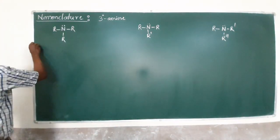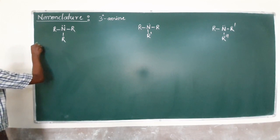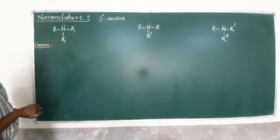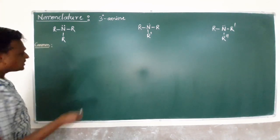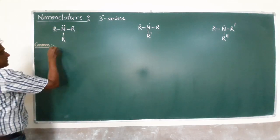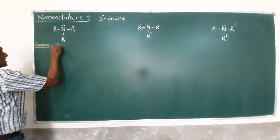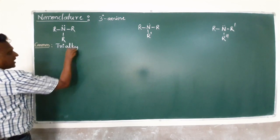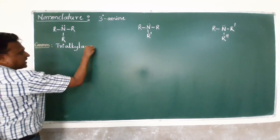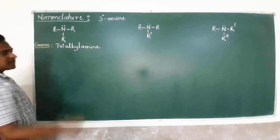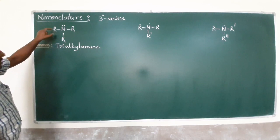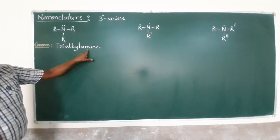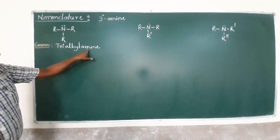For common nomenclature, when all three alkyl groups are the same, they are called a trialkyl amine. So in the common system, if all three groups are the same, they are called trialkyl amine.